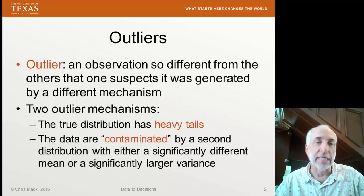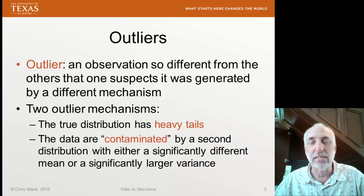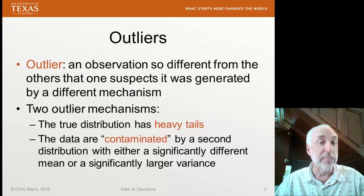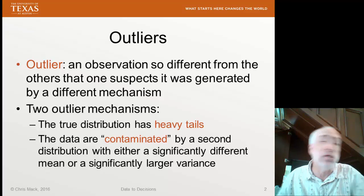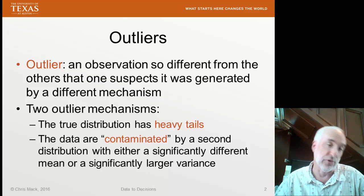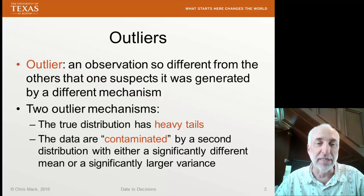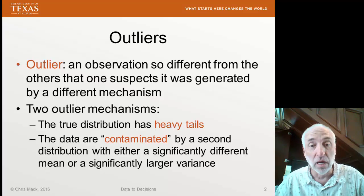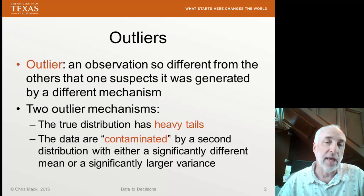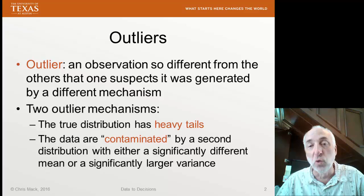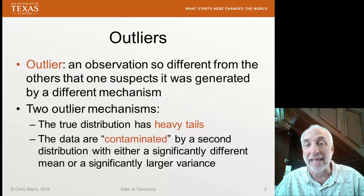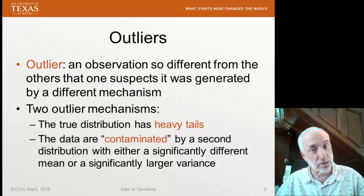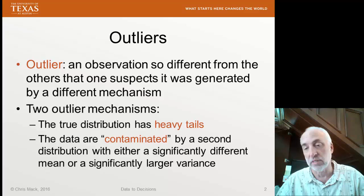The second potential mechanism for generating outliers is when the data is contaminated. Our data has been contaminated by a second distribution that either has a significantly different mean or a significantly larger variance so that we get some extreme data. If we simply recorded a number down wrong in our lab notebook, that would be a second distribution of only one data point with a significantly different mean. If we had a broken measurement tool behaving more erratically, it might be a larger variance for a certain portion of the data collected.